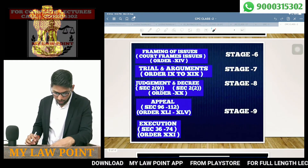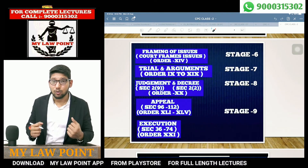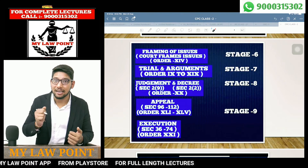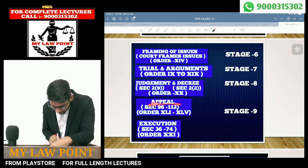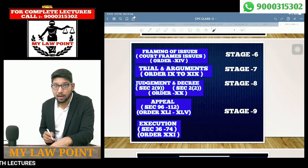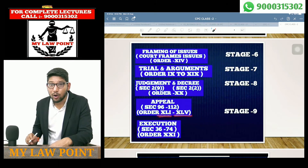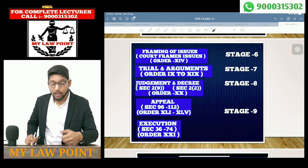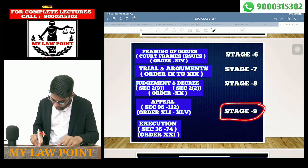Next Stage: by suppose, if a party is not satisfied, they will go for Appeal. Appeals are covered under Sections 96 to 112, and Orders 41 to 45. This is considered as Stage 9, and almost the last main stage.